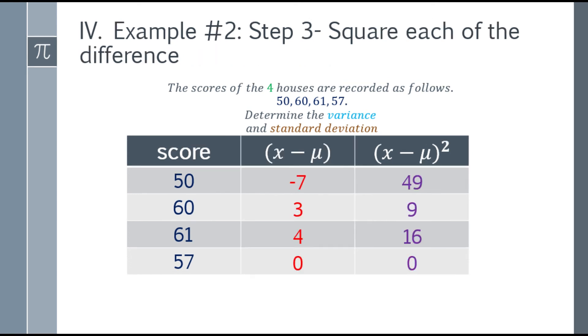Step 3, you have to square each of the difference. So square the second column. Negative 7, square that. That will be 49. Next is 9, 16, and 0.